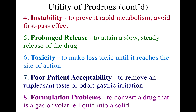Certain drugs are not stable and may undergo rapid first-pass metabolism. You can protect the active compound using a prodrug approach to avoid first-pass liver metabolism and improve stability. You can also use the prodrug approach to attain a slow, steady release of a drug over time. Furthermore, you can make a drug less toxic until it reaches the site of action, or even after it reaches the site of action, using a prodrug approach.